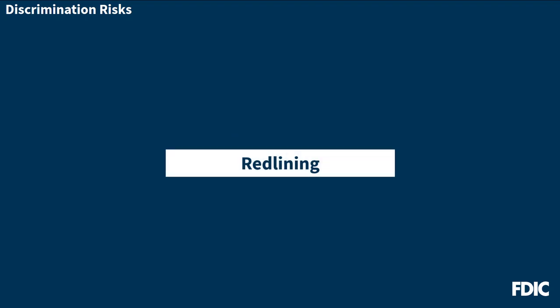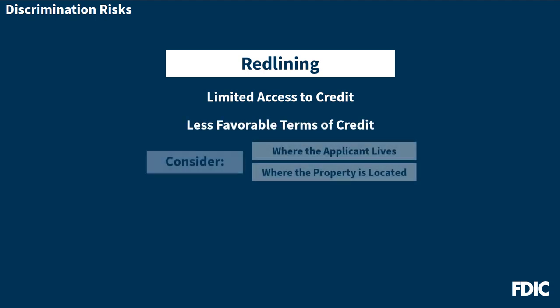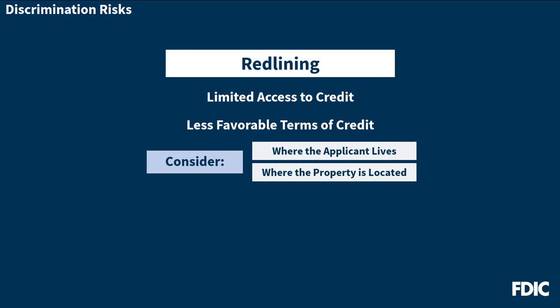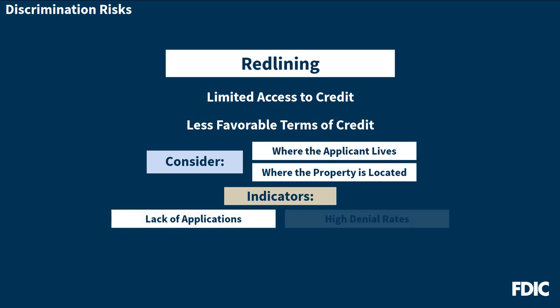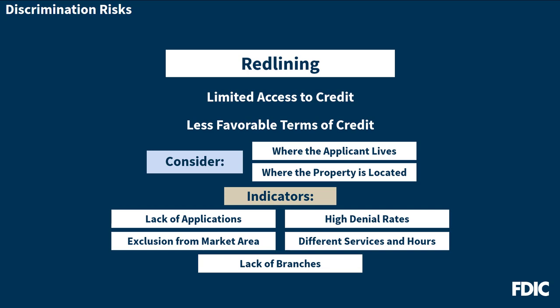Another discrimination risk is redlining, which occurs when a bank limits access to credit or provides less favorable credit terms because of the characteristics of an area where an applicant resides, will reside, or where the property to be mortgaged is located. Red flags for potential redlining include a lack of applications from or lending in minority areas, disproportionately high denial rates for applicants in minority areas, exclusion of minority areas from the bank's CRA assessment area, differences in services or hours of operation at branches in minority versus non-minority areas, and a lack of branches in minority areas. There could also be reverse redlining, which is the practice of targeting certain borrowers or areas with less advantageous products or services on a prohibited basis.